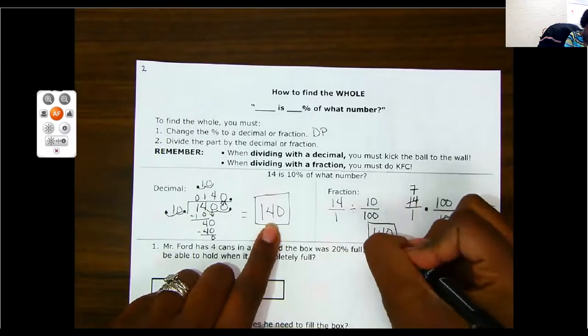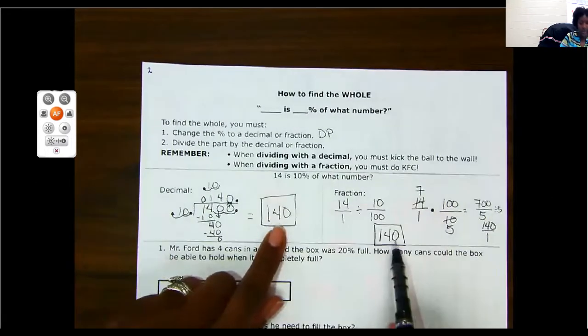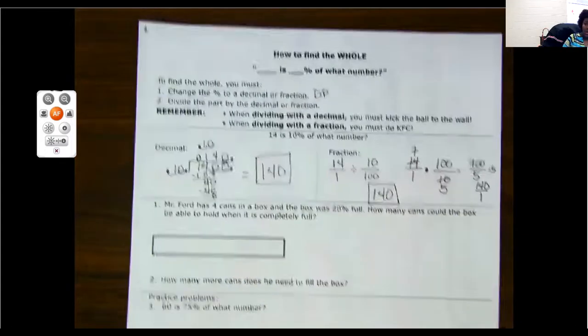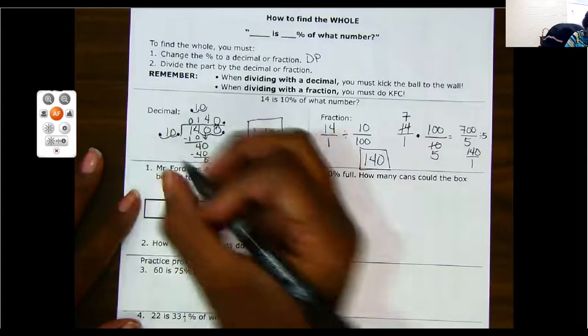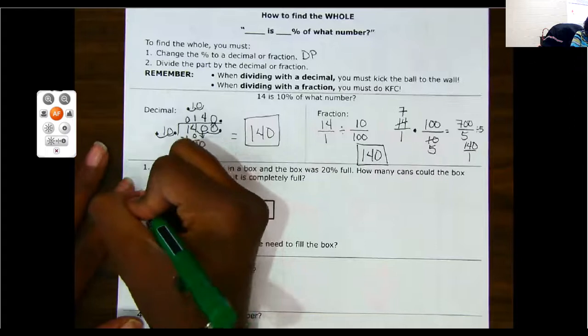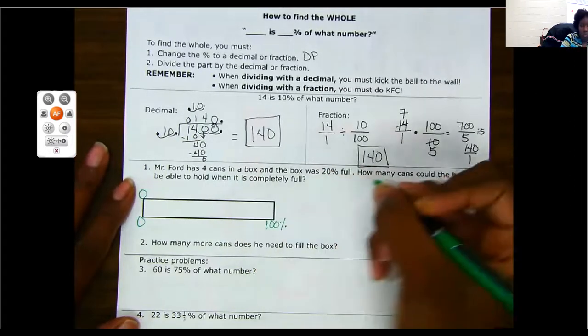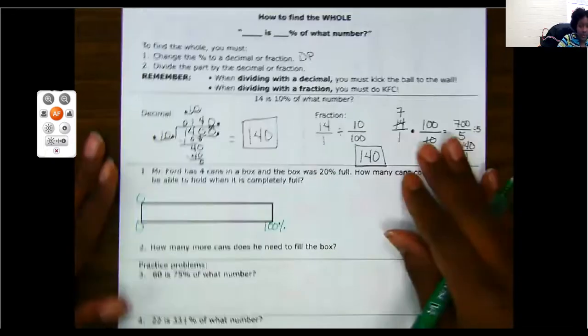As you can see, either doing with the decimal or the fraction way, I still get the same answer. So it's completely up to you which one you prefer. Okay. The other way is with the percent bar. Remember with the percent bar, the bottom always has your percents. And if you have a whole or a total, it always goes over the 100. So let's go ahead and read our problem.